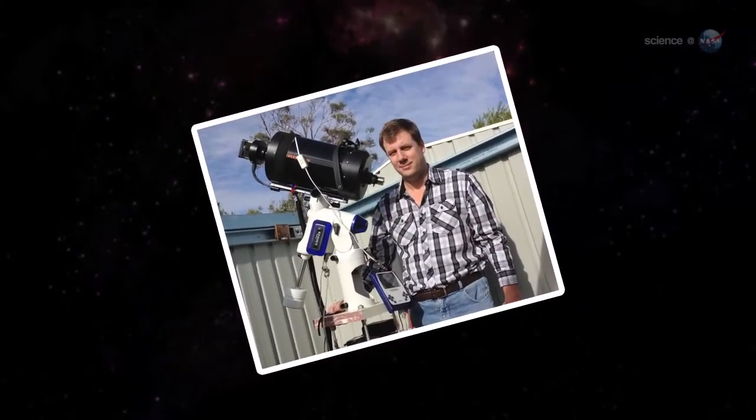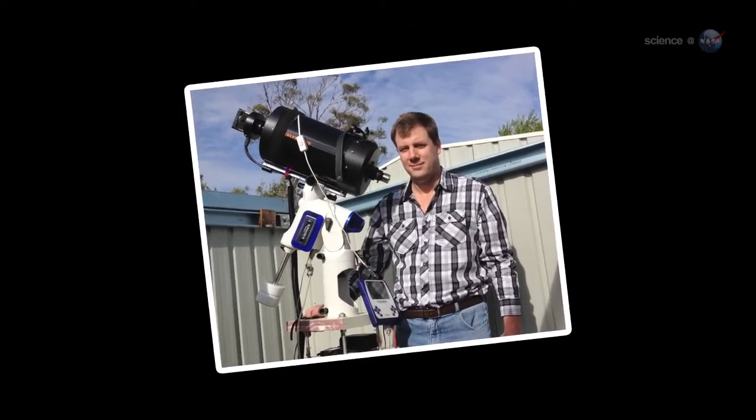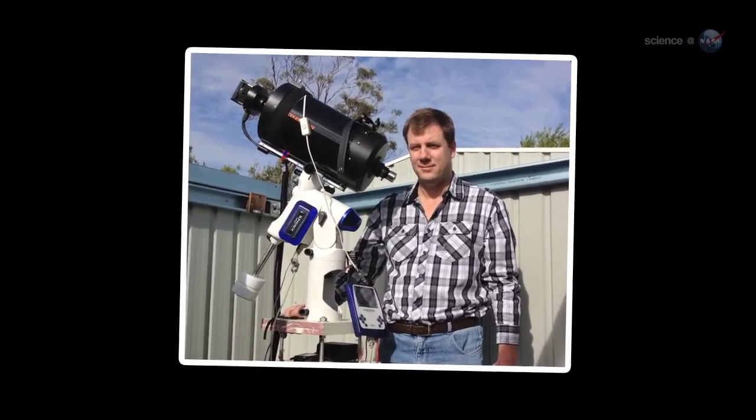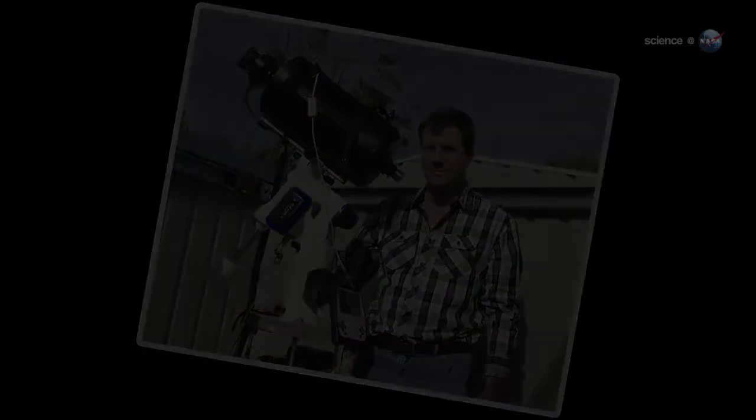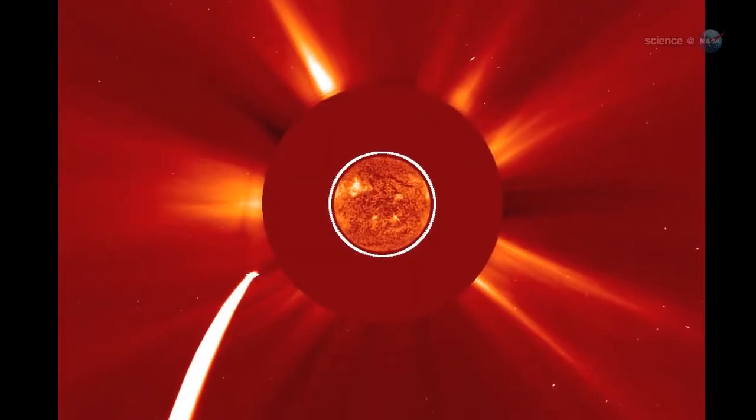Last November, amateur astronomer Terry Lovejoy discovered a different kind of comet. The icy fuzzball he spotted in the sky over his backyard observatory in Australia was heading almost directly for the Sun.